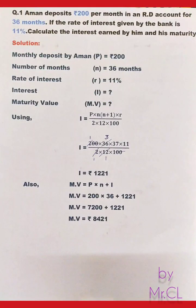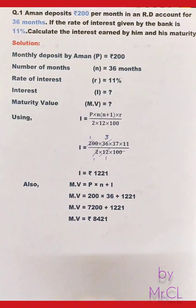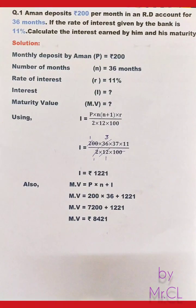Amonth deposits rupees 200 per month in an RD account for 36 months. If the rate of interest given by the bank is 11%, calculate the interest earned by him and his maturity value. For the solution, we first write the details given in the question.